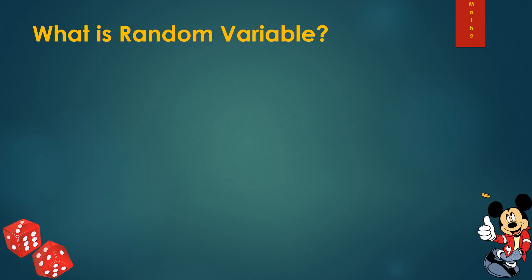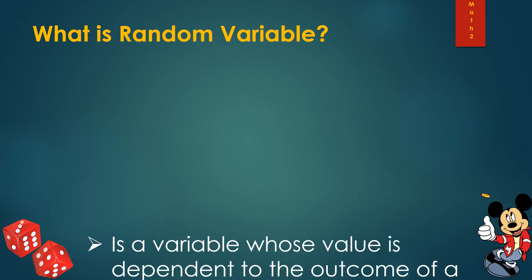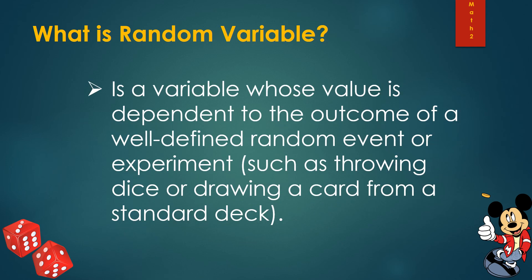A random variable is a variable whose value is dependent on the outcome of a well-defined random event or experiment. An experiment is doing an action that will give out a result. For example, tossing a coin is an experiment because we are doing something on a coin and we expect a result.